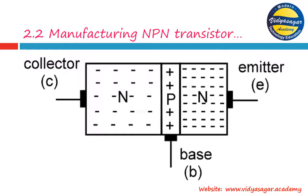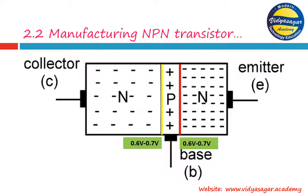When the collector and base layers join, a junction is produced — called the collector-base junction. Similarly, a second junction is produced between the base layer and emitter layer — called the base-emitter (BE) junction. When both junctions form, the process is similar to a diode: arsenic atoms donate their fifth electrons to aluminium atoms, and potential barrier voltages of 0.6 to 0.7 volts are produced.